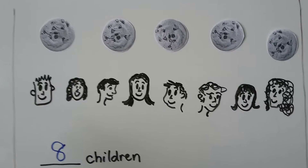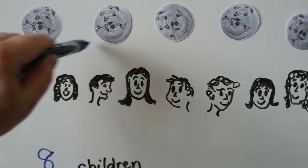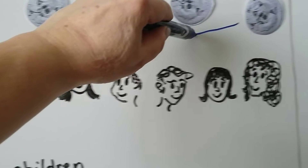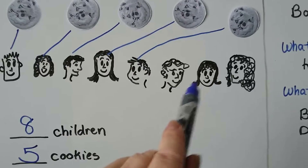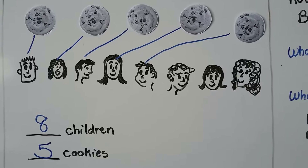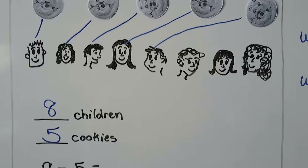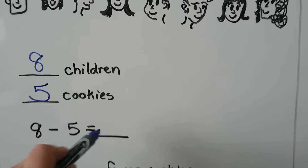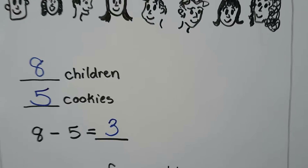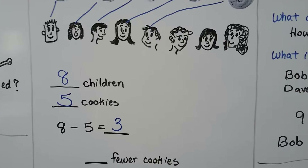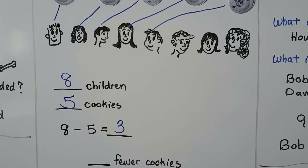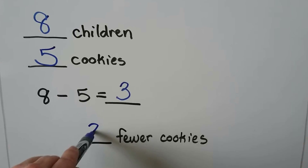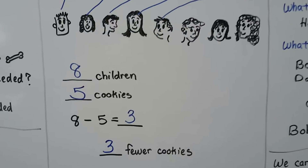We can draw lines to match the cookies to the children. One, two, three children are not going to get a cookie. Eight children minus five cookies equals three children not getting a cookie. How many fewer cookies are there? There are three fewer.